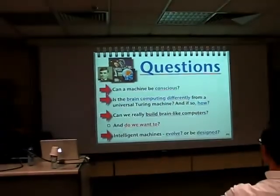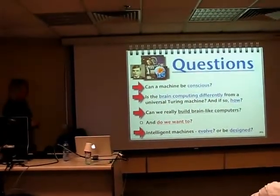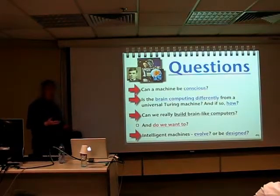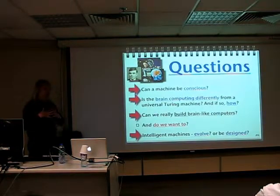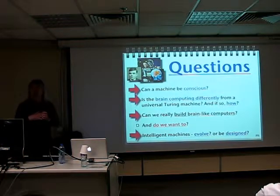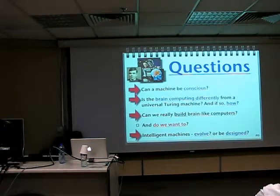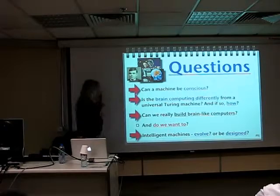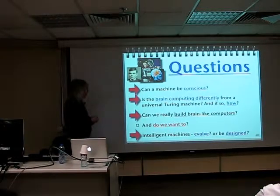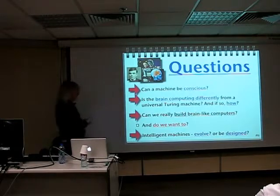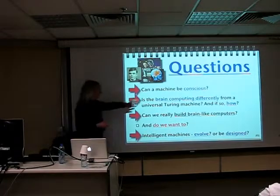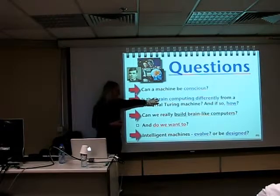We're left with lots of questions that people can't answer yet. Can a machine be conscious? Daniel Dennett will solve the problem by saying consciousness is actually an illusion — it just accompanies what we're doing because we're inside the machine. So consciousness doesn't exist — that's one solution. But for most people, they'd really like to know a bit more about it. People would like to know: is the brain computing differently from a universal Turing machine, and if so, how? The general tendency is to think that there is something different happening there.